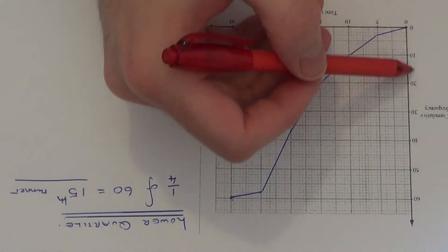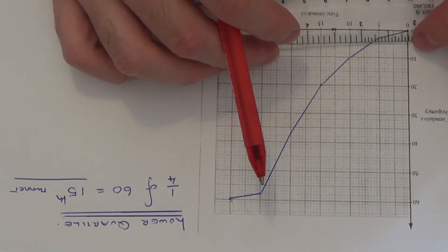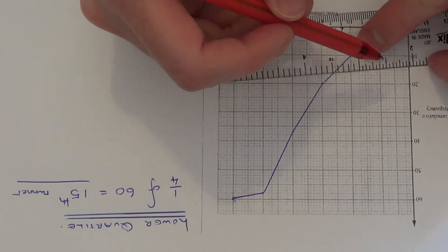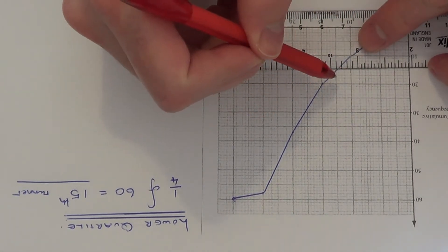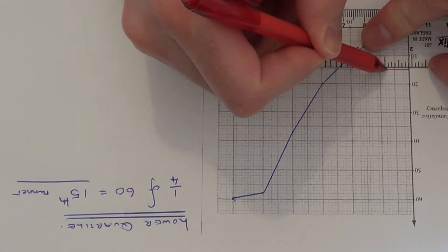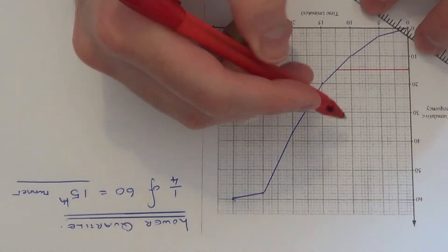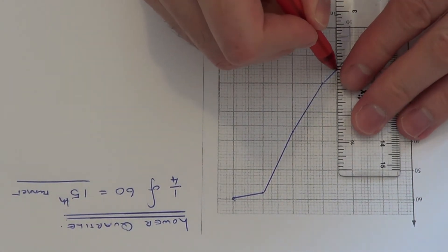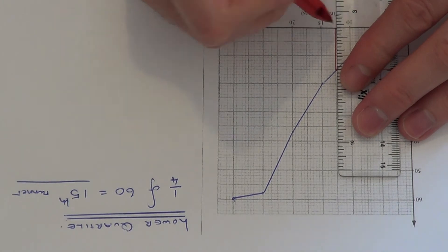If you look at your cumulative frequency, look for 15. This is halfway between the 10 and the 20. If we draw a line across to our cumulative frequency graph, and then do a line going downwards.